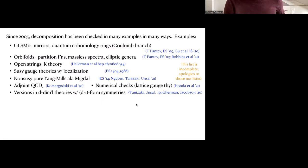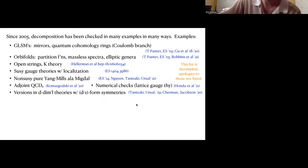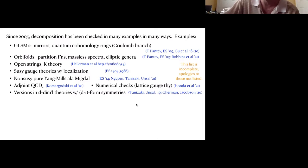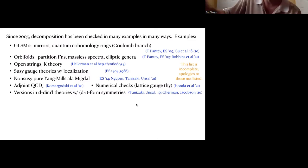Tests of decomposition. Since I grew up doing string compactifications, the first test we did involved gauge linear sigma models. We went and computed mirrors and quantum cohomology rings. Back in 2005, we did this using Hori-Vafa technology to understand mirrors to abelian GLSMs, and we can see decomposition very explicitly there. Recently, we were able to revisit these issues using notions of non-abelian mirrors, and again we see decomposition explicitly in non-abelian mirrors as well. One also sees the same structure in open strings and in K-theory.